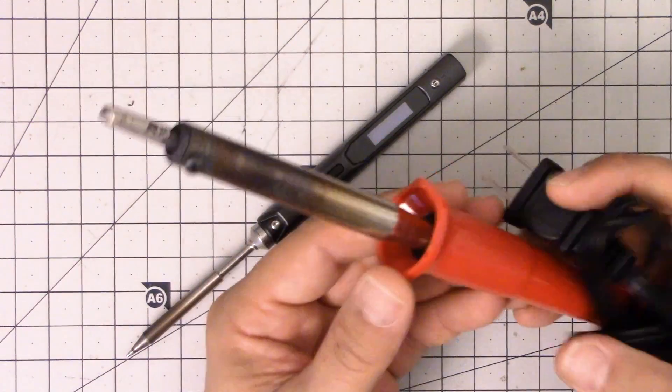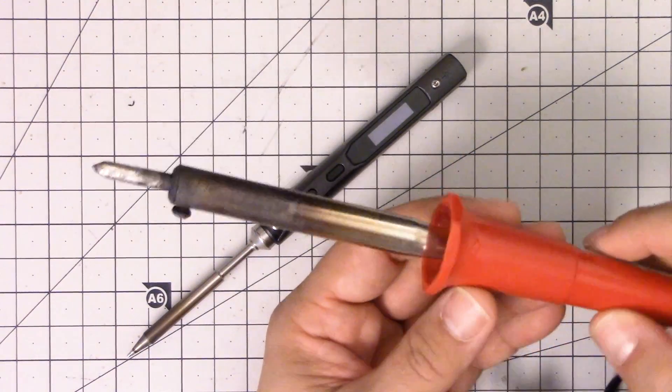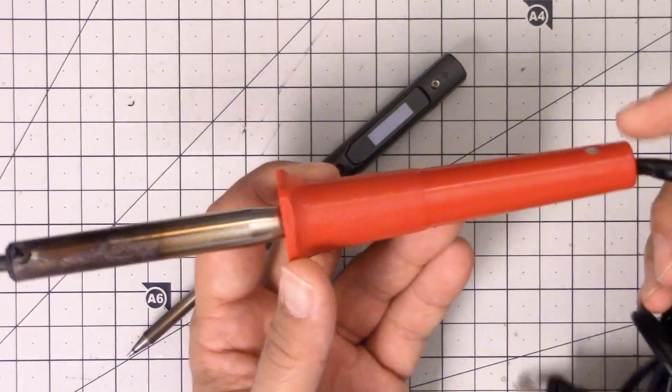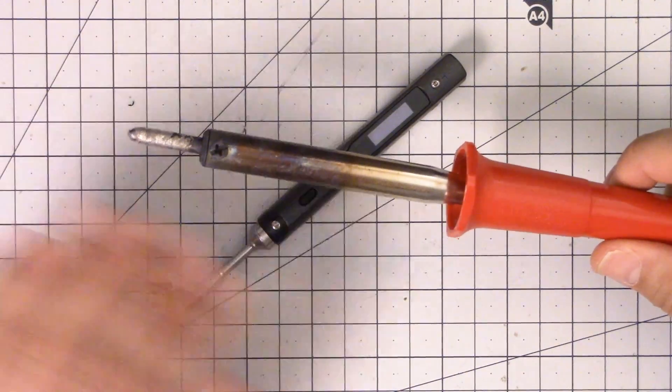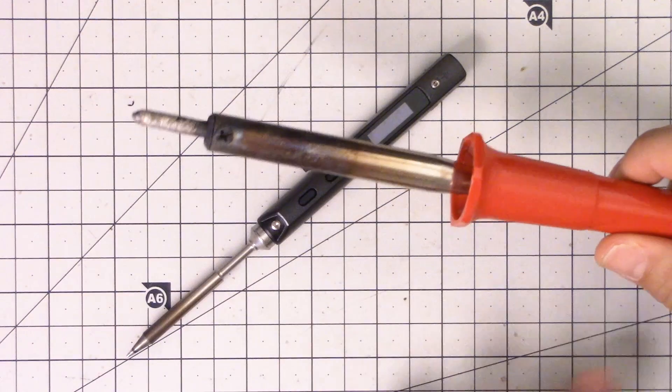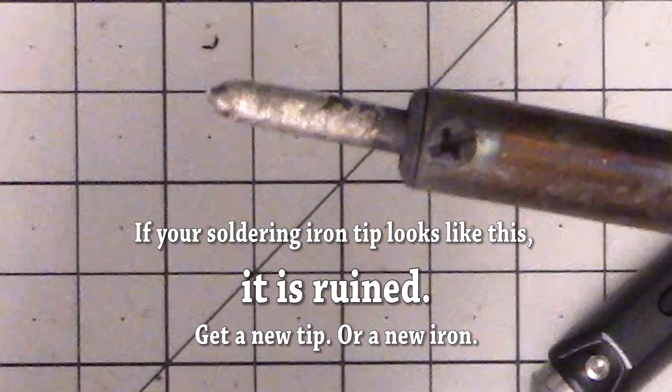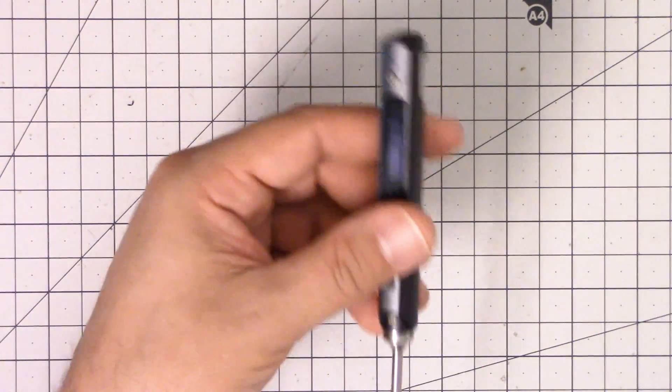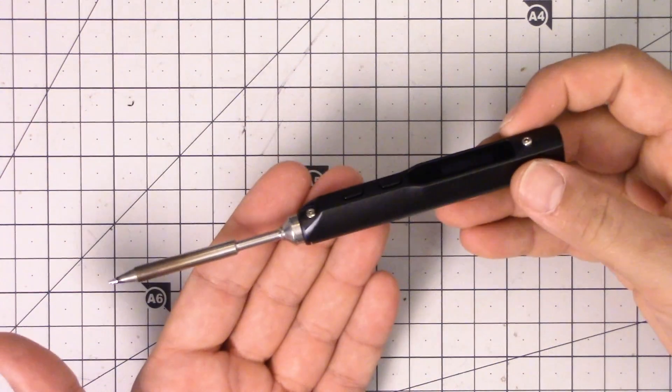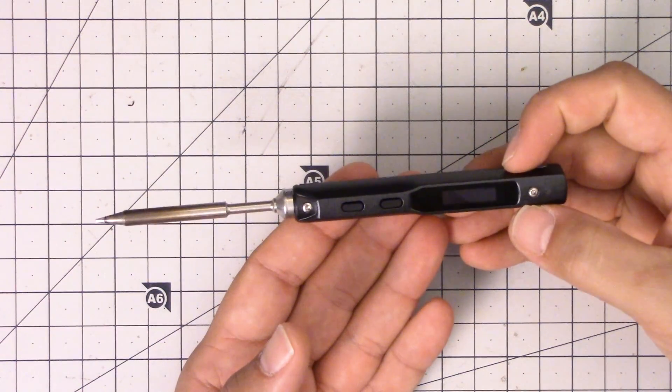This is also true for electric irons that aren't temperature controlled. You may have an iron very similar to this—it just dumps 60 watts or 40 watts through the iron and you get what you get. Temperature control is really important because having the iron at the proper temperature is critical to good soldering.